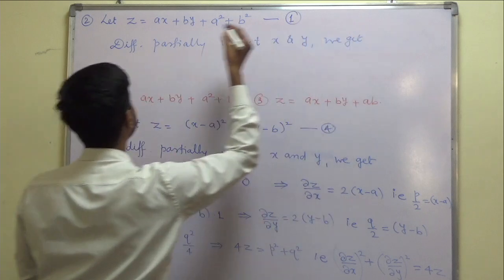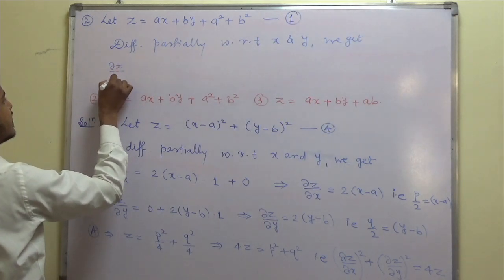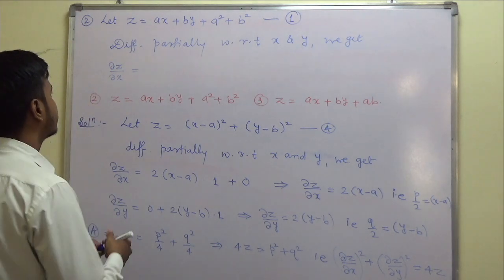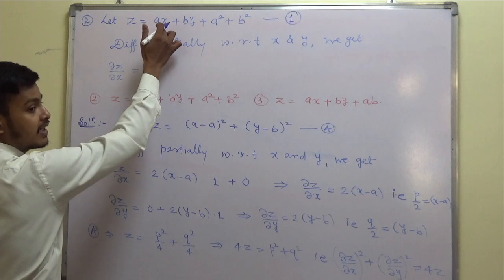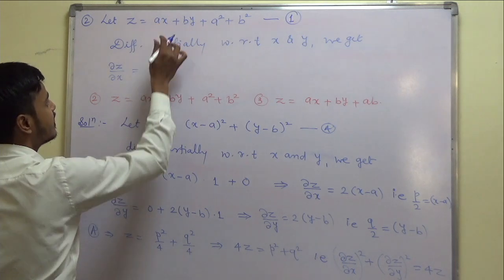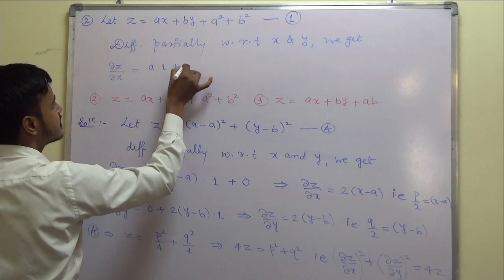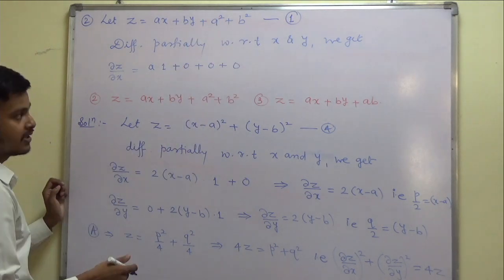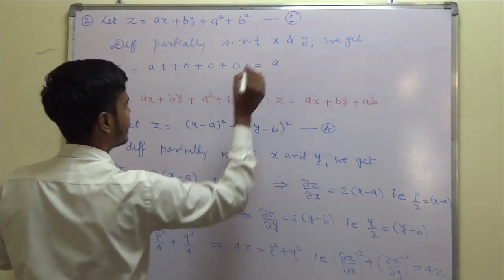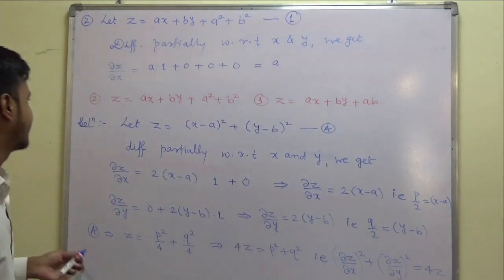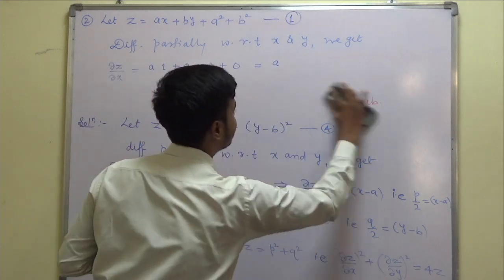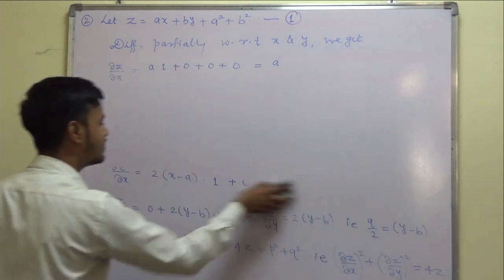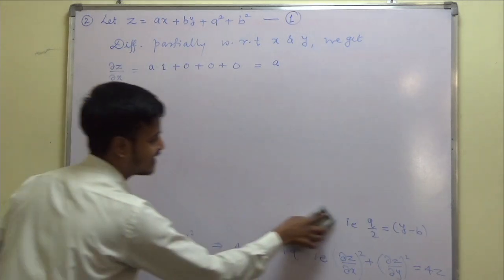Del z by del x — is there a term of x? Yes. The derivative of ax with respect to x is a, and all other terms are constants, so their derivatives are 0. Therefore del z by del x equals a, which is p equals a. This is very simple.